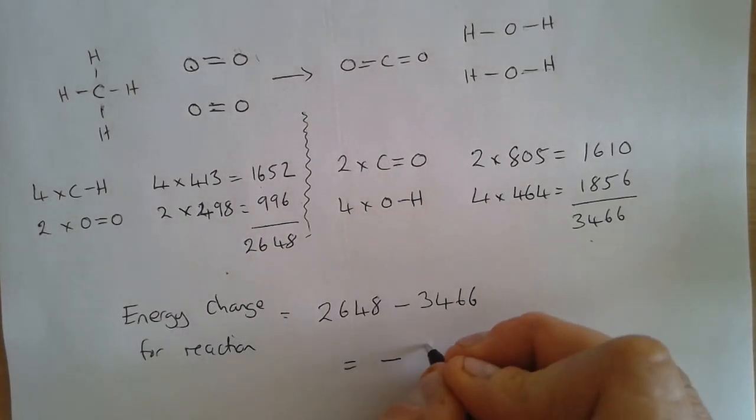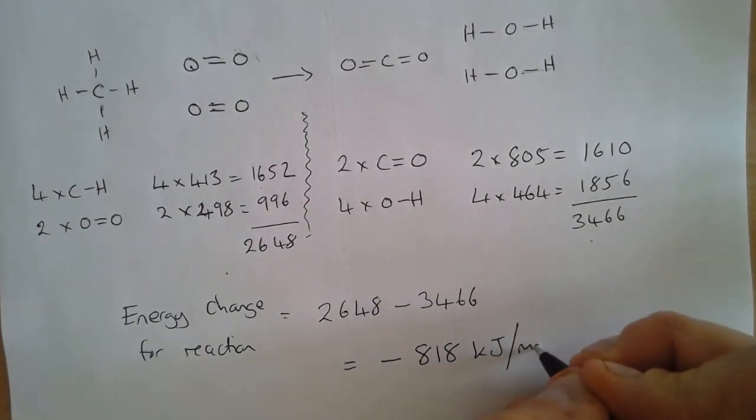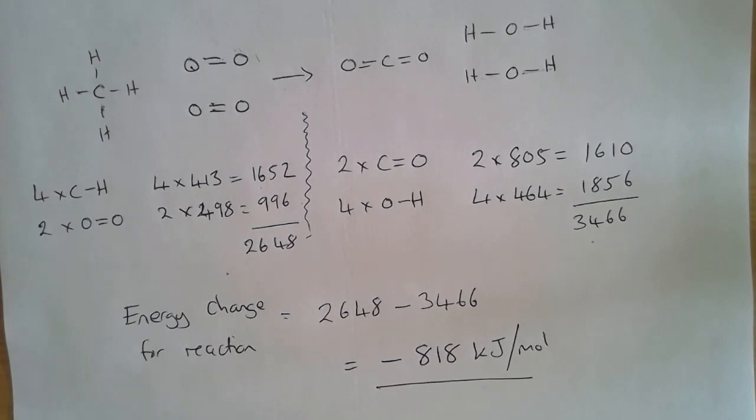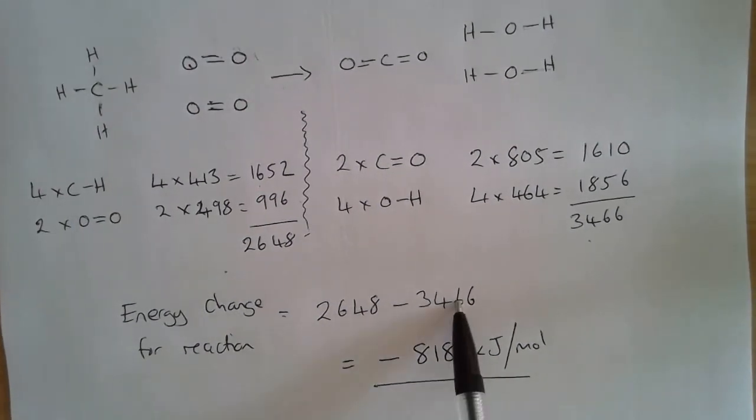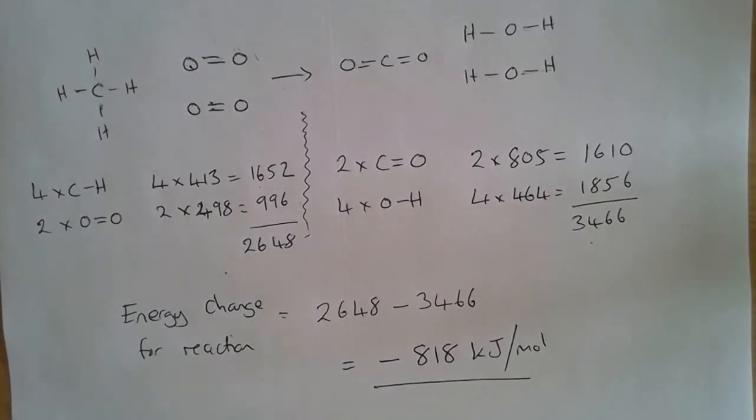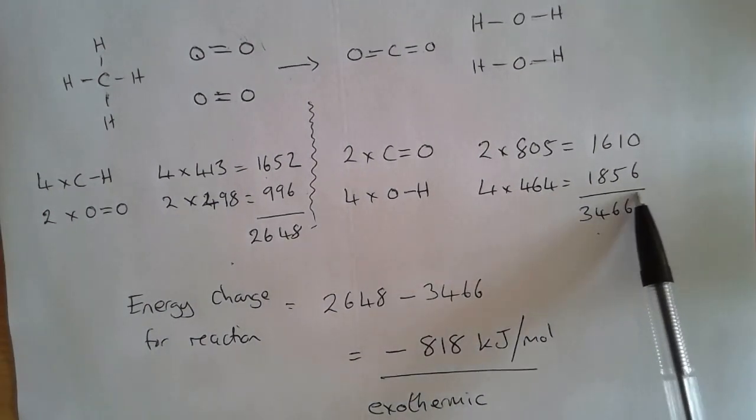Which gives us minus 818 kilojoules per mole. Now at GCSE it actually doesn't make that much difference whether or not we put a plus or minus, we could do this either way around and we'd still get the marks. It's important though that we do recognize that it is a negative value. The reason it's a negative value is because this reaction is exothermic overall.